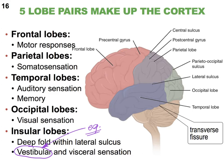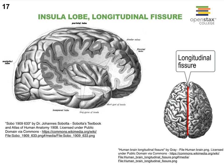On slide 17, we can see how deeply located the insular lobe is. We've taken out a big chunk of the brain's cerebral hemisphere to where we even see some of the white matter, and deep in there we see the insular lobe — a bunch of crinkly cortex. Of course, we have one on either side.